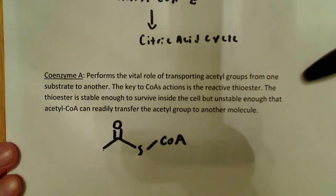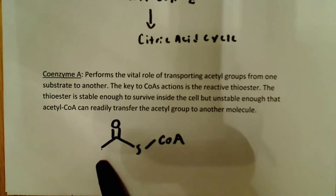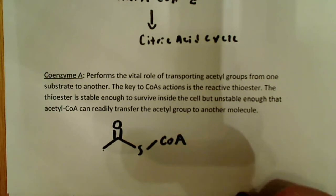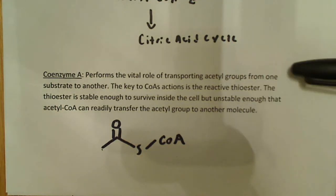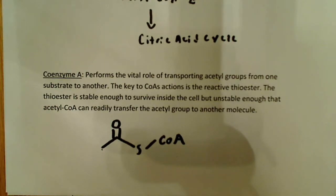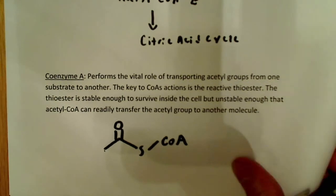Coenzyme A is really important. Here's a shorthand version of acetyl-CoA — the acetyl group is two carbons. Coenzyme A performs the vital role of transporting acetyl groups, two-carbon groups, from one substrate to another. The key to CoA's action is the reactive thioester bond. The thioester is stable enough to survive inside the cell, but unstable enough that acetyl-CoA can readily transfer acetyl groups to another molecule.